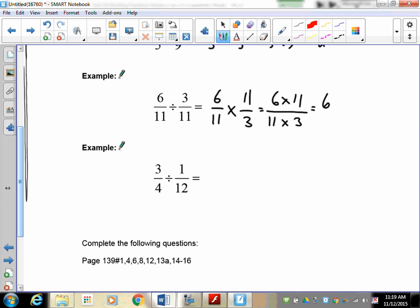And the last question, take the first fraction alone, multiply by the reciprocal of the second one. Top times top, bottom times bottom gives you three times twelve which is thirty six over four, which is nine.